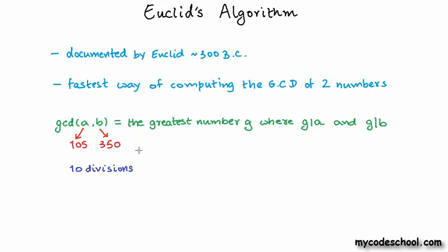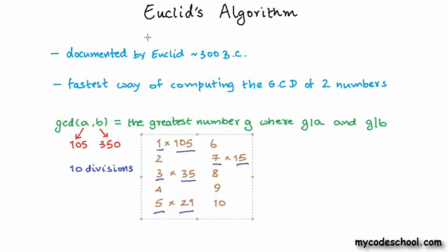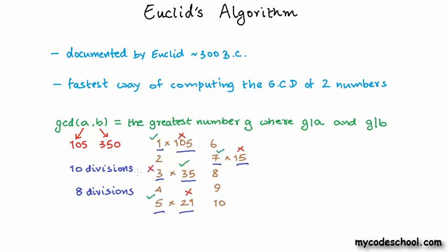If you perform these divisions manually, you will end up with a table showing that 105 has exactly 8 divisors found in pairs where each pair together has a product of 105. We will now divide 350 by all 8 of these divisors, meaning we need to perform another 8 divisions. After performing these 8 divisions, we will see that 350 is divisible by exactly 4 of the divisors of 105. So the GCD is the highest of these 4 common divisors, which is 35. Our pretty efficient divisor-based algorithm took only 18 divisions in total to compute the GCD of 350 and 105.